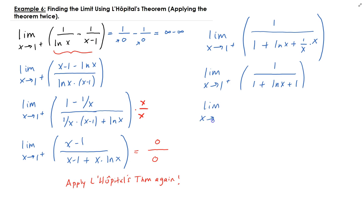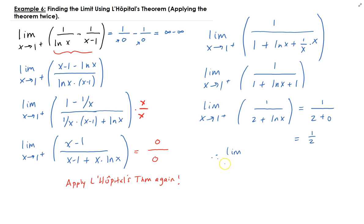Now doing a direct substitution, we get 1 over (2 plus ln(1)), and since ln(1) is 0, we actually get the value of 1/2. Therefore, the limit of this expression as x approaches 1 from the right is 1/2.